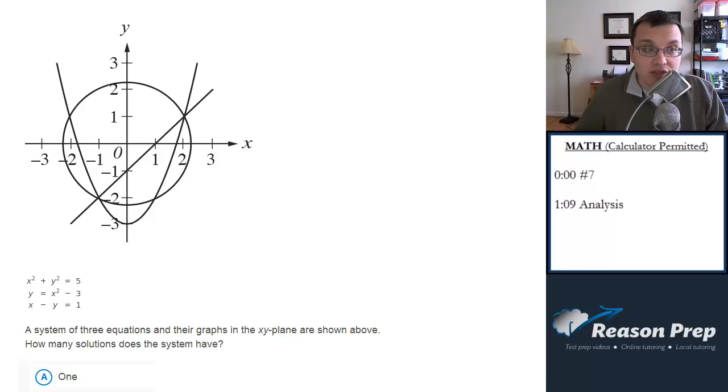So for example, this point right here, this looks like it's like negative one, negative two, approximately. We could check if we wanted to by plugging in, but we don't have to. This point, negative one, negative two, satisfies each of these equations, so therefore it's a solution of all three and it's a solution of the system.